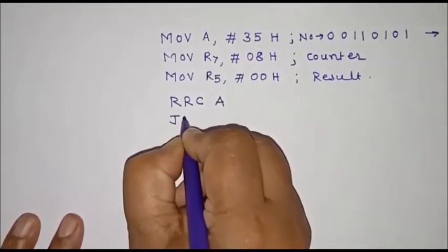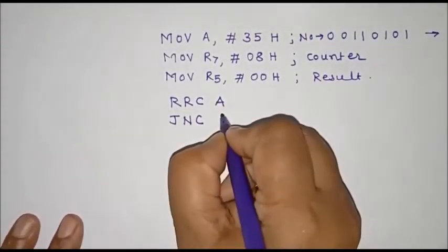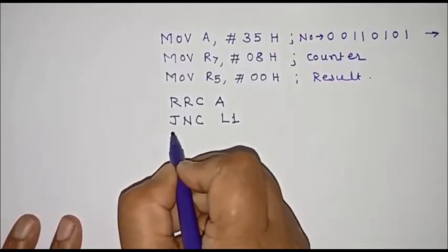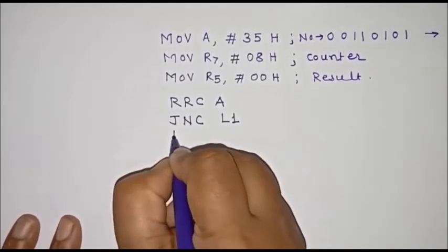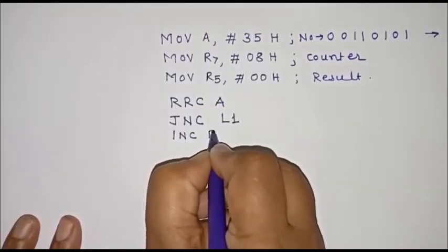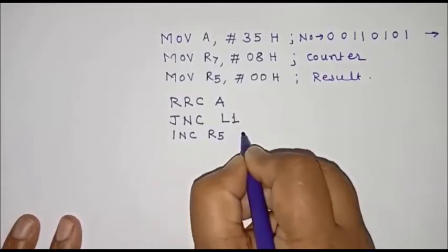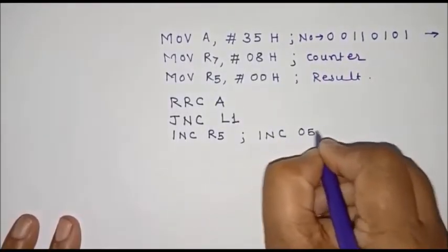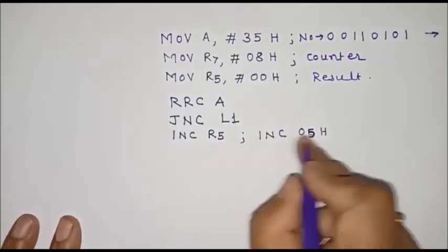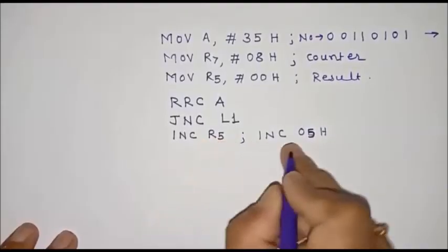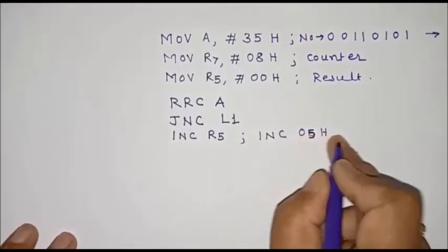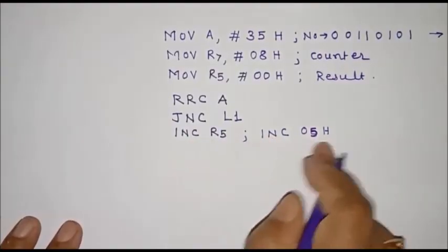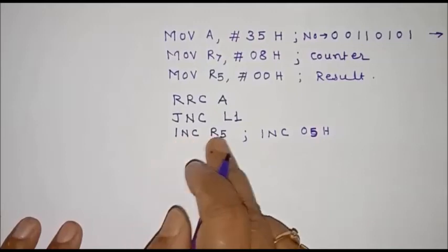I'll use the instruction JNC — jump if no carry. If carry is not there, it will jump to label N1. But if carry is there, we want to increment register R5. We can write INC R5, but some assemblers will not execute this instruction directly, so we can use INC 05H where 05H is the address of register R5 — that is direct addressing mode. This instruction increments register R5.